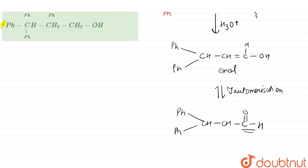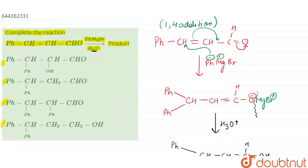Let us look at the options. In the first option, two phenyl groups are present with an OH group, but in our answer there is no OH group, only H — so this option is eliminated. The next option has two phenyl groups but no double bond, so that option is also eliminated.